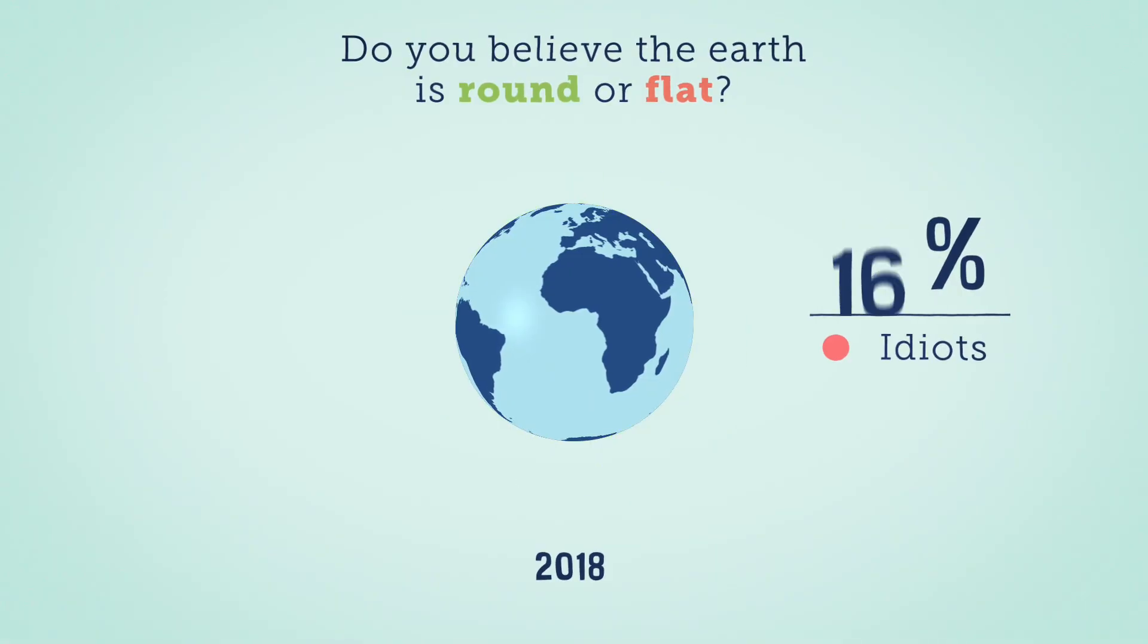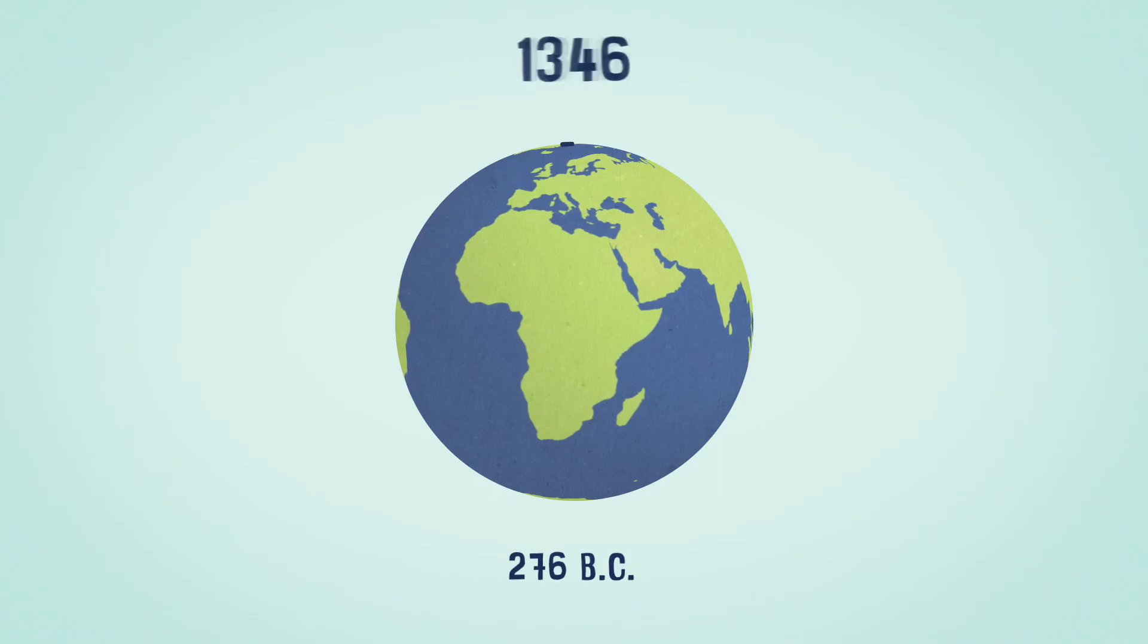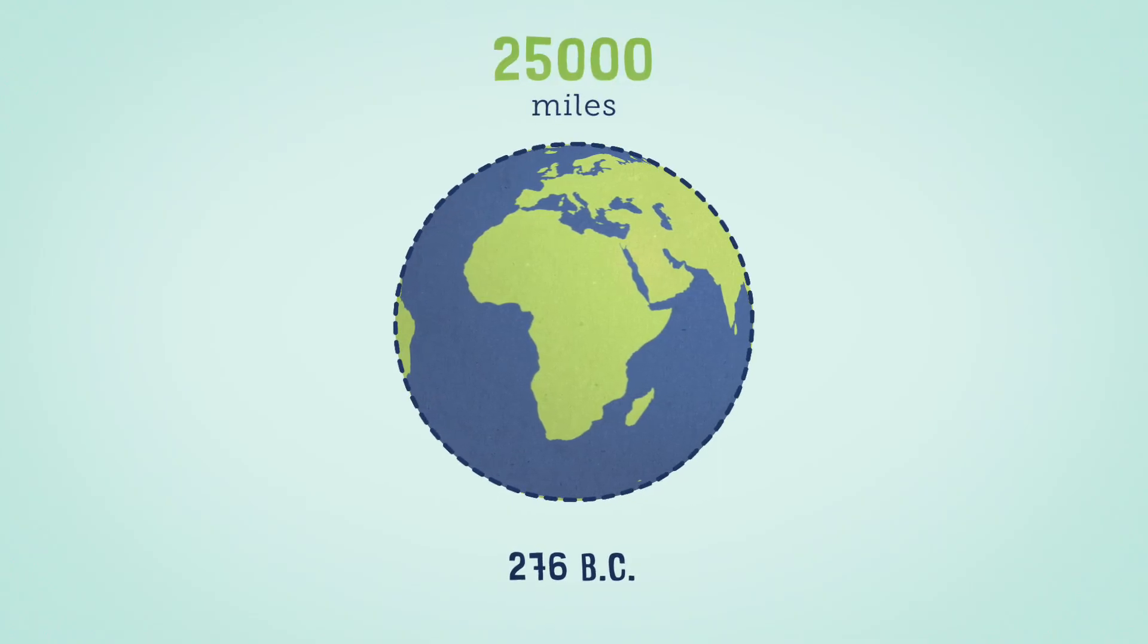Not only have we known for centuries that the earth is round, but someone born almost 300 years before Christ was able to measure the circumference of the globe with remarkable accuracy, using only a stick and the sun.